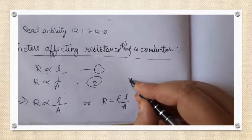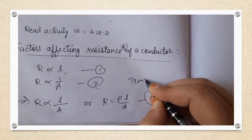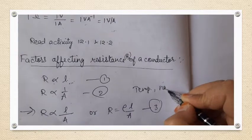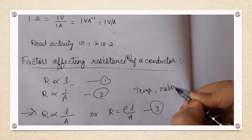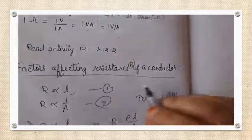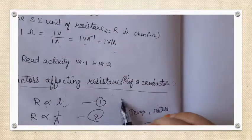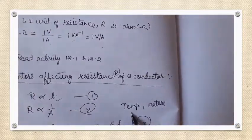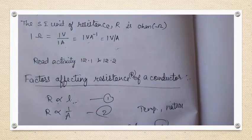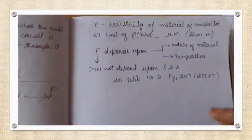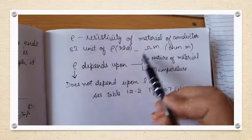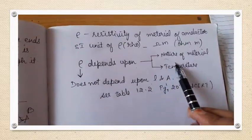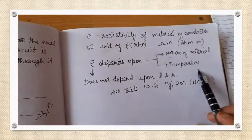Notice the clear difference: resistance R depends upon length, area of cross-section, temperature, and nature of material — for conductors resistance is less, for insulators resistance is more. But resistivity ρ does not depend upon length and area of cross-section; it depends only upon the nature of material and temperature.